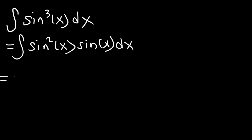Sine squared, using the Pythagorean identity, is 1 minus cosine squared.